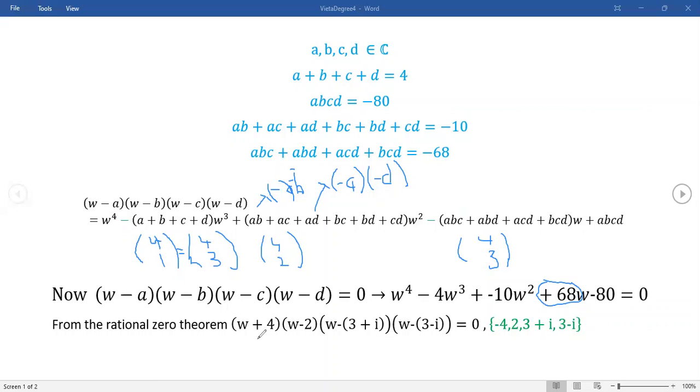Now, from the rational zero theorem - and again, I left out some stuff - both two and negative four divide this constant term. You can actually check that two works right here. If you put a two right in here, it just kind of unravels after that. If you put a two right here, this would become 16 - 32. Two is the smallest divisor of 80 I can think of outside of one, and one didn't work.